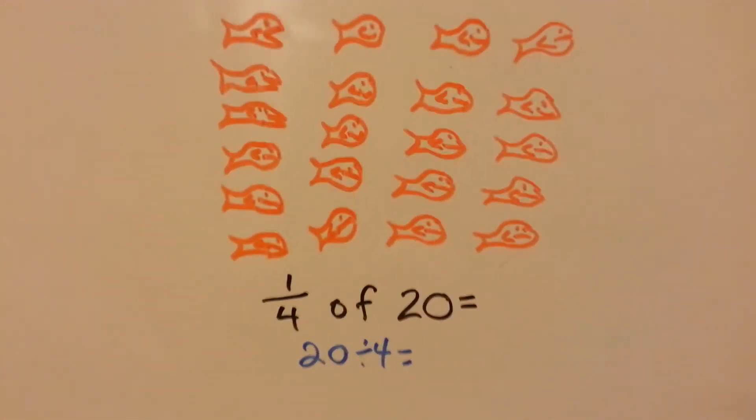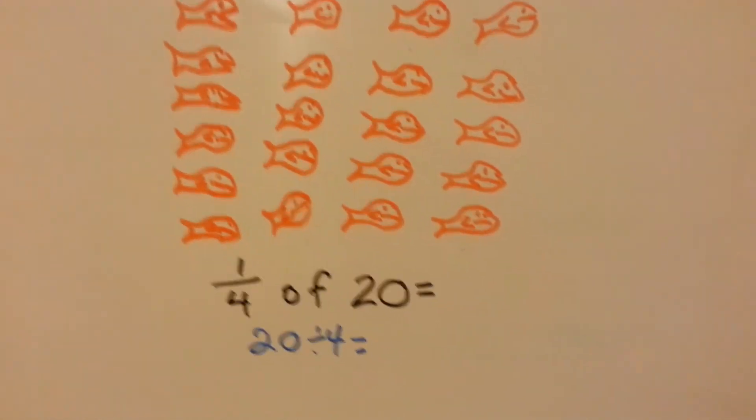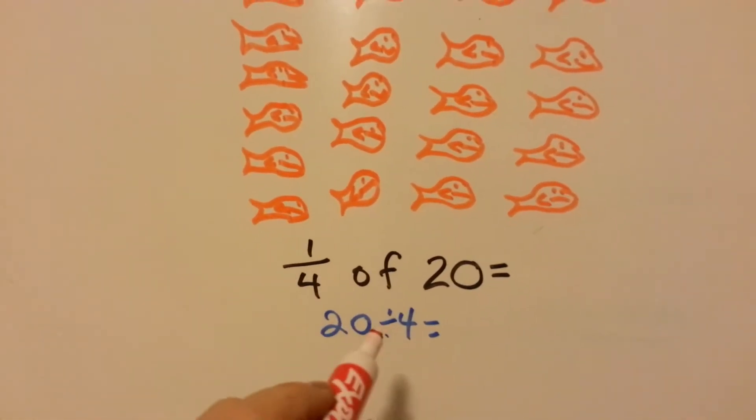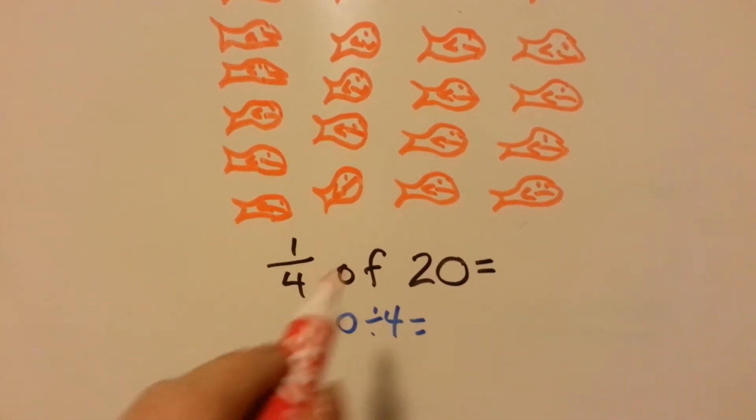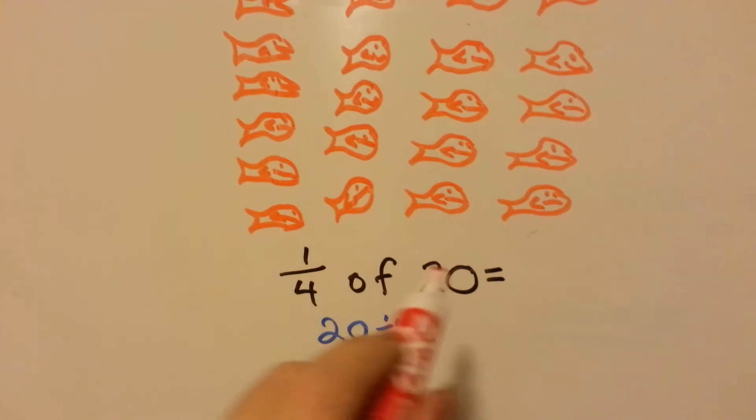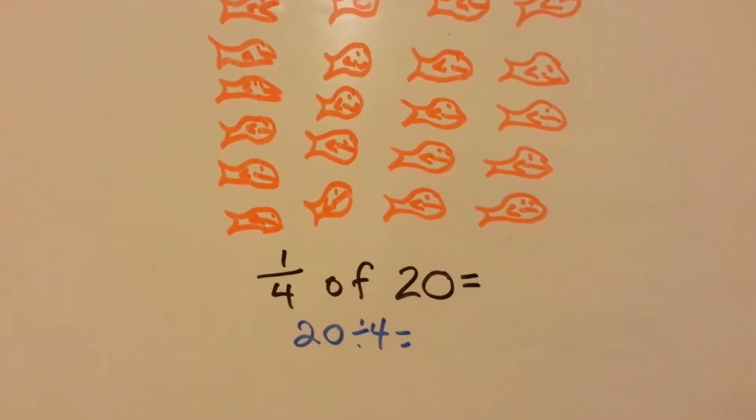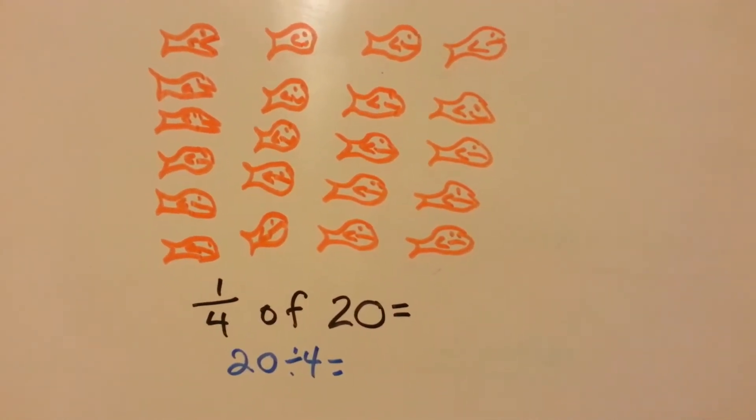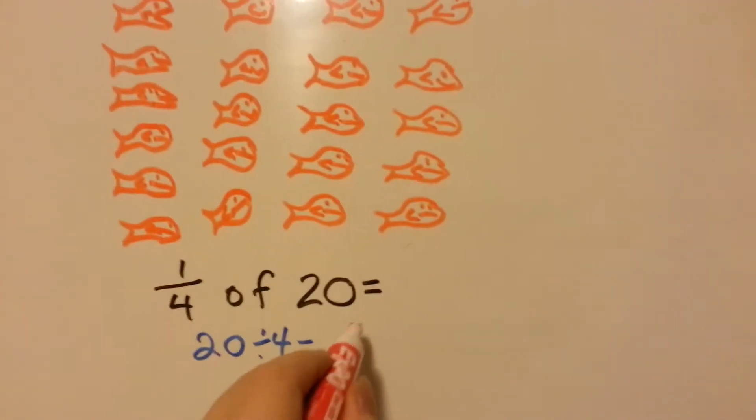Now we have goldfish. We've got 20 goldfish, and we need to find a fourth of 20. So we're going to divide 20 by 4. Because this is the denominator, and that's the whole number, and it tells us that we need to divide. What times 4 equals 20? Do you know? Do you know your times table? What can go into 20 4 times? 4 times 5 is 20.